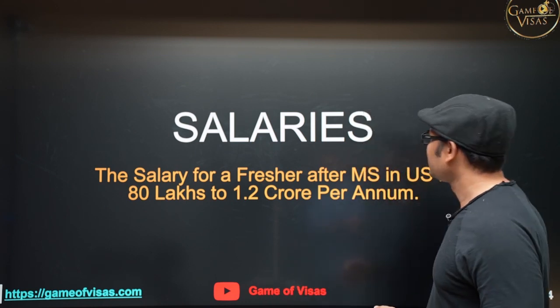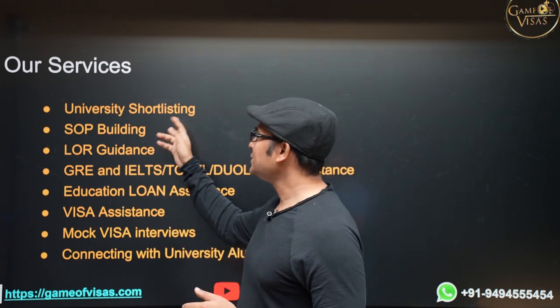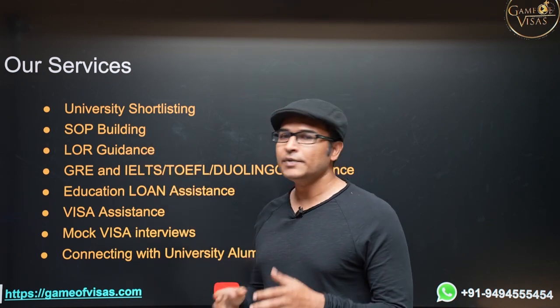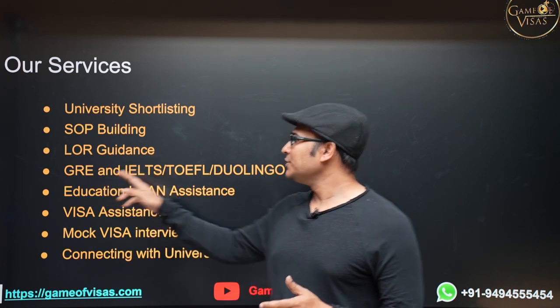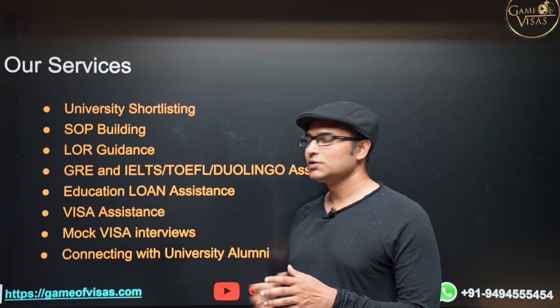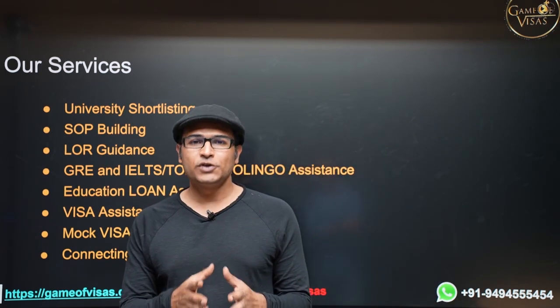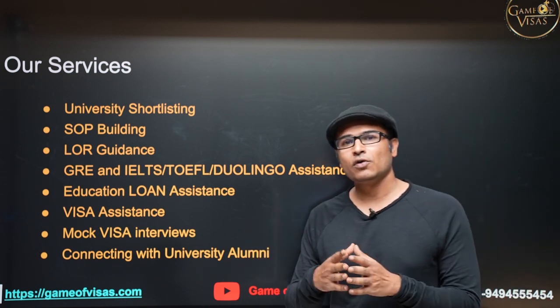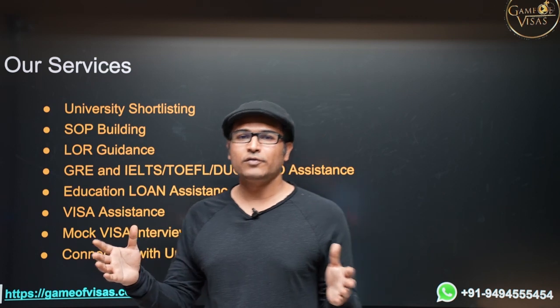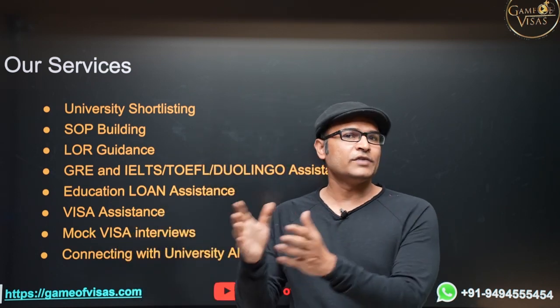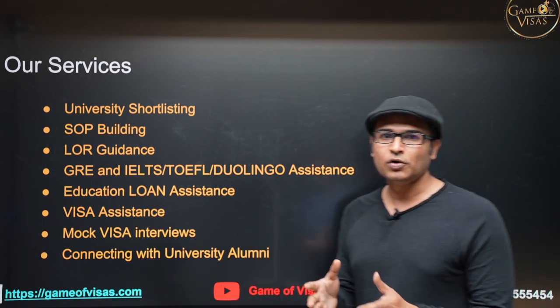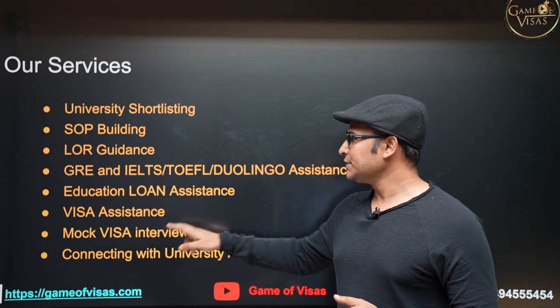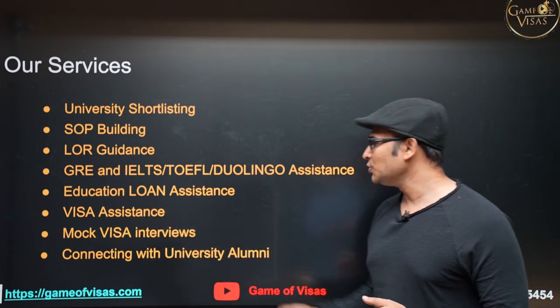These are all the services we provide: university shortlisting depending on your profile, statement of purpose building, LOR guidance, GRE and English test assistance, and education loan assistance. You don't have to have any collateral - without any security you can get education loan. Getting education loan is very simple these days. Whatever the amount of fee, you have a range of universities you can apply for - 10 lakh, 20 lakh, or 50 lakh universities. You can get complete education loan and pay it off in one year after you get a job. We also do visa assistance, mock visa interviews, and connecting with university alumni.